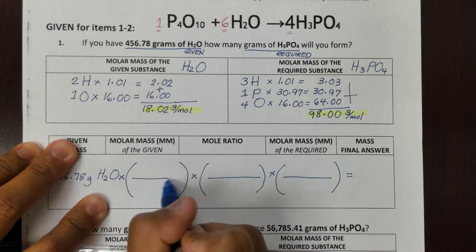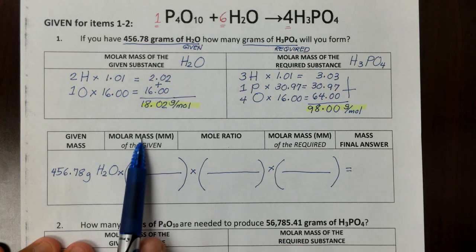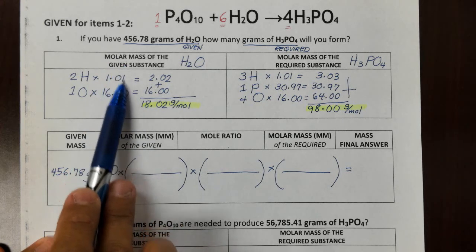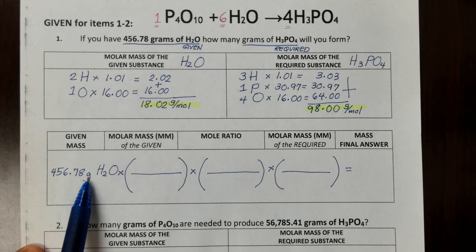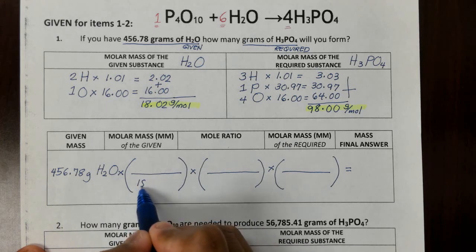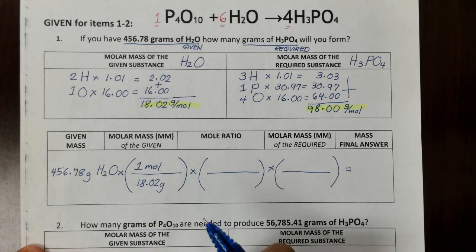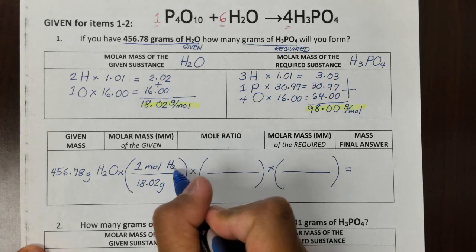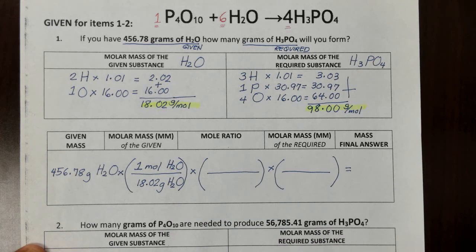We set up three sets of parentheses with a numerator-denominator line in each. For the molar mass of the given, we use 18.02. The gram unit needs to cancel, so 18.02 grams of H2O goes in the denominator with 1 mole H2O in the numerator. This cancels gram H2O from the given with gram H2O in the denominator.